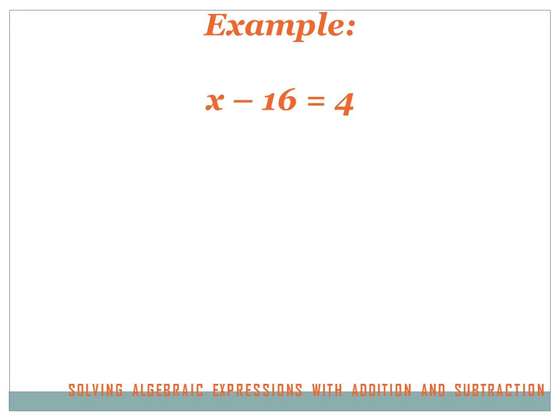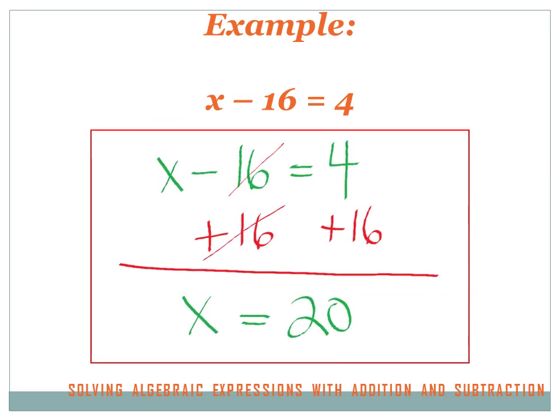Let's try one: x minus 16 equals 4. We're going to do the same thing to both sides to keep it equal, and do the opposite of subtracting 16 to isolate x. The opposite of subtracting 16 is adding 16. So I add 16 to both sides. On the left side, x minus 16 plus 16 — the plus 16 and minus 16 cancel out, leaving just x. On the right side, 4 plus 16 equals 20. So x equals 20.